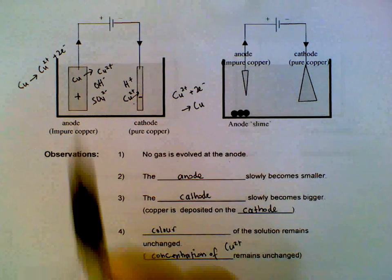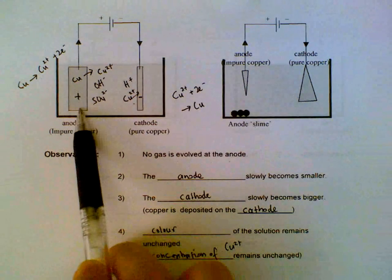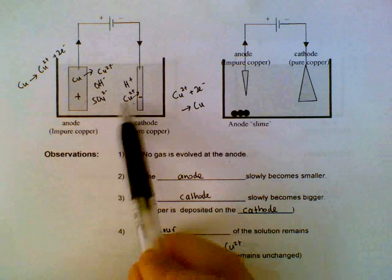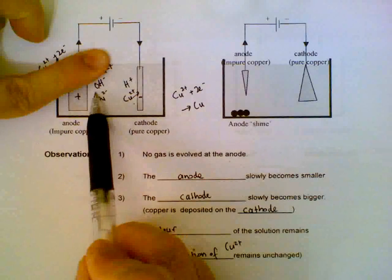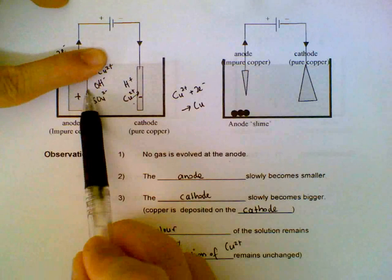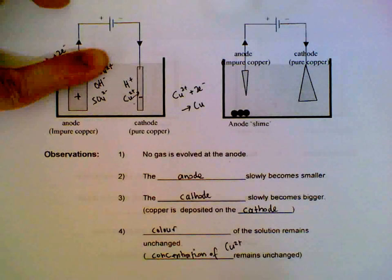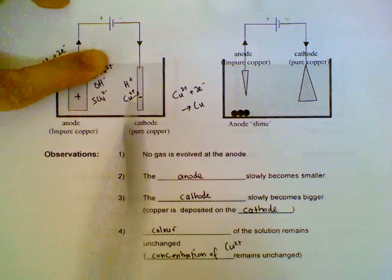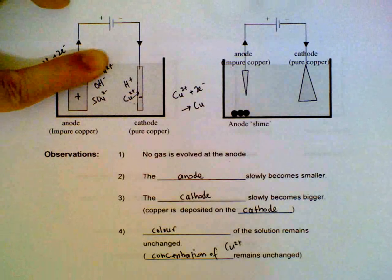If this was, again if you compare it to an inert electrode, we have copper being removed and hydroxides being removed. The intensity of the blue color solution will actually decrease because we are removing copper ions without replacement.